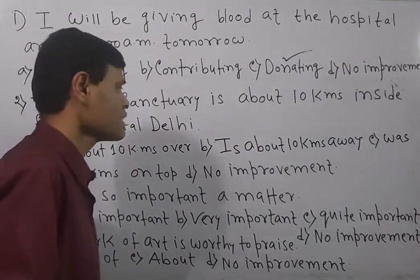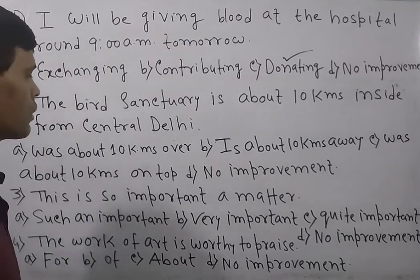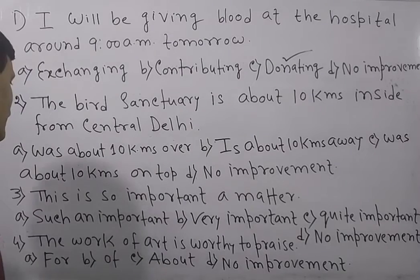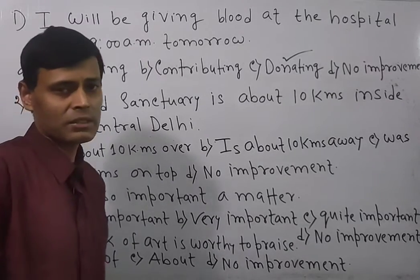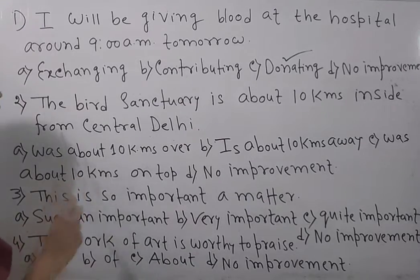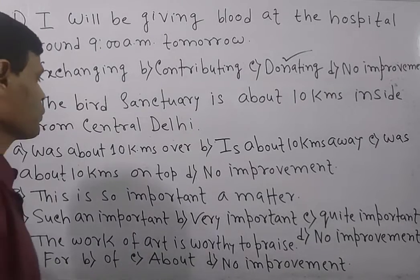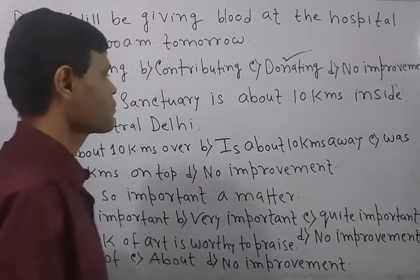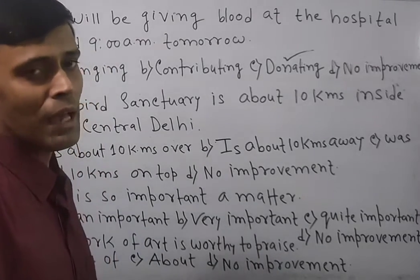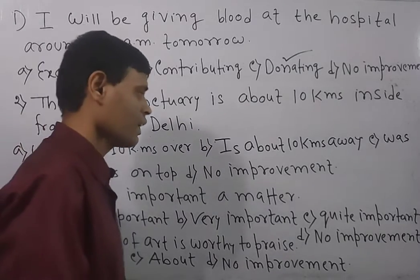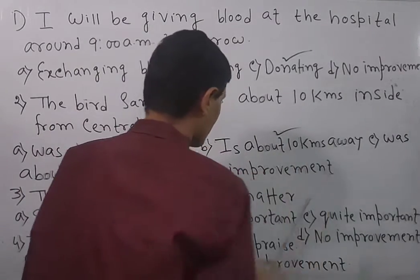The next question: 'The blood sanctuary is above 10 km in sight from central rally.' There are four options: was about 10 km away, is about 10 km away, was about 10 km on top, no improvement. The sentence is based on simple present tense, so options with 'was' are eliminated. We can say 'the sanctuary is about 10 km away from central Delhi,' so the answer is option B: is about 10 km away.